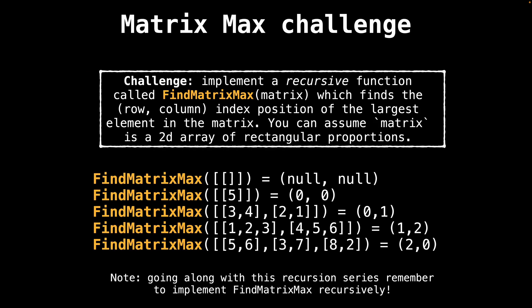Like in the other videos, I have a mini coding challenge for you. We just looked at how to find the maximum element and its associated index in a one-dimensional list. The challenge is to implement a recursive function called find matrix max, which finds the row-column index position of the largest element in the matrix. You can assume that the input matrix is a 2D array of rectangular proportions. I'm going to be walking through the solution in the slides to come, so feel free to pause the video here and give it a try.